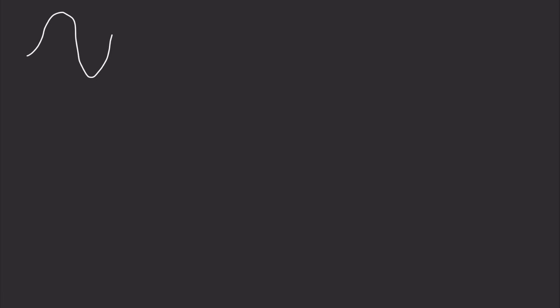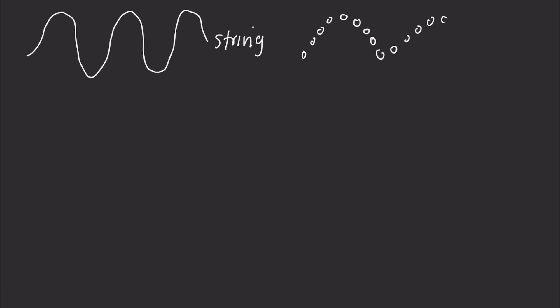If we have a wave of any type — a wave traveling on a string, a wave of particles like electrons, or sound waves — any wave that travels can be described by a single wave equation. In this video we're going to derive that wave equation.